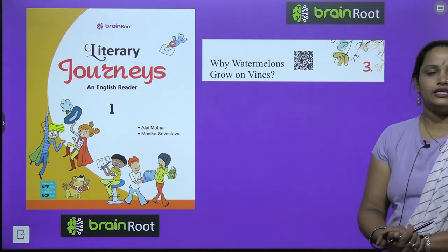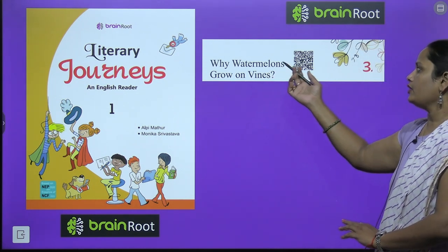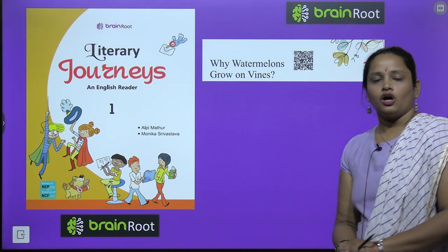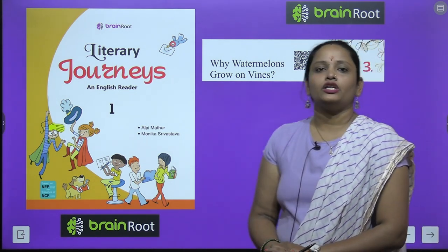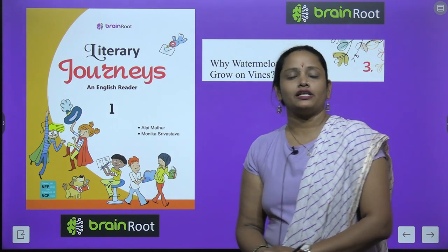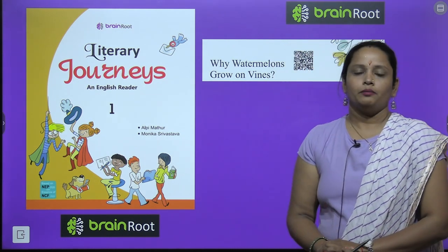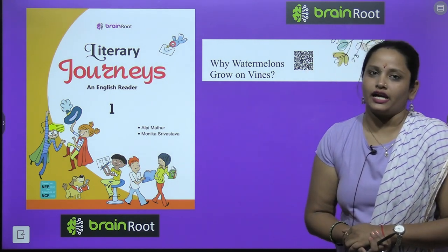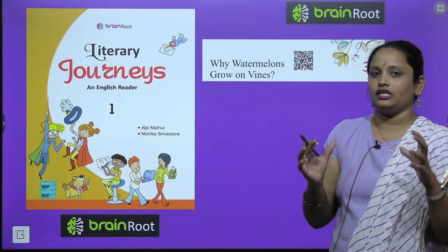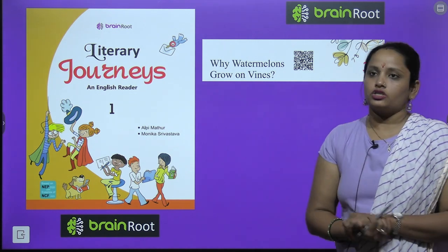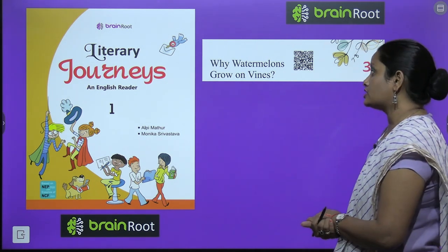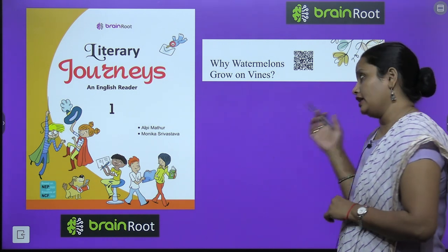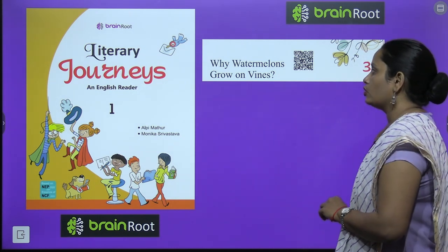Today we are going to start with chapter number 3 and the name is 'Why Watermelons Grow on Vines.' So children, I think everybody knows what a watermelon is — it's very big, green from outside and red from inside. Now here we have a question: why do watermelons grow on vines? Vines means bale.